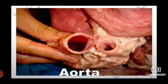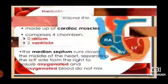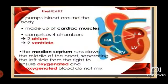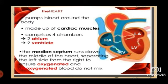You can see the real aorta here. You can see the valves — valves are like gates that control blood flow. The heart pumps blood around the body and is made up of cardiac muscles. So to summarize: four chambers, two atria, two ventricles. The septum is in the middle. Oxygenated and deoxygenated blood should not be mixed up.